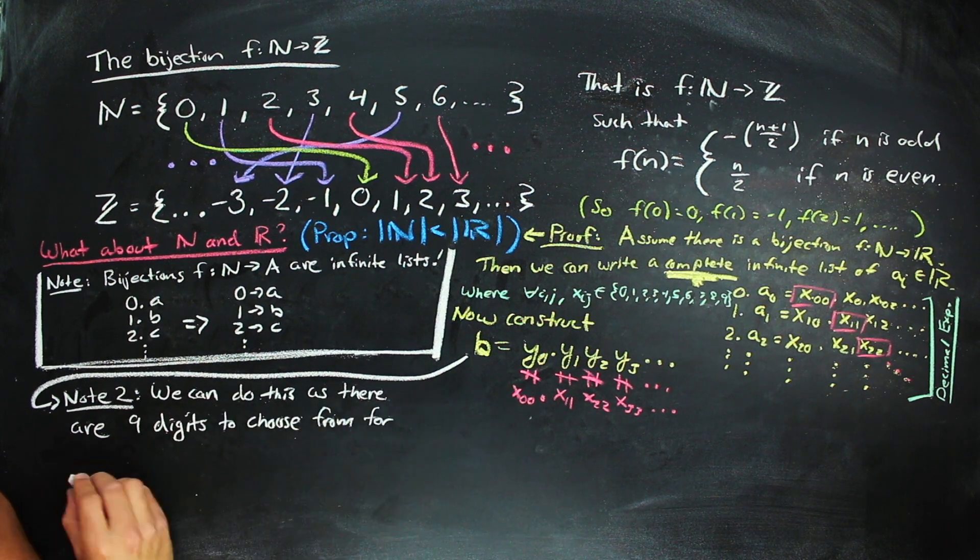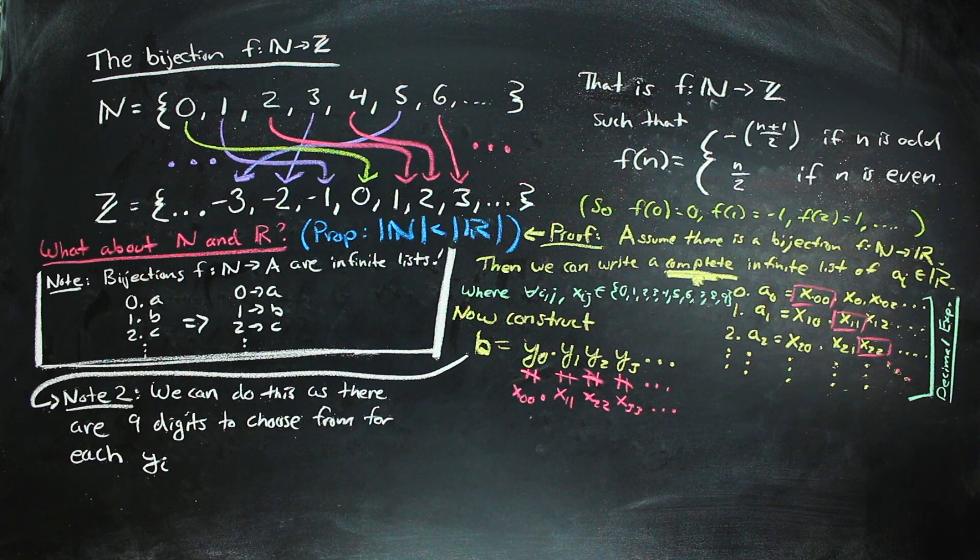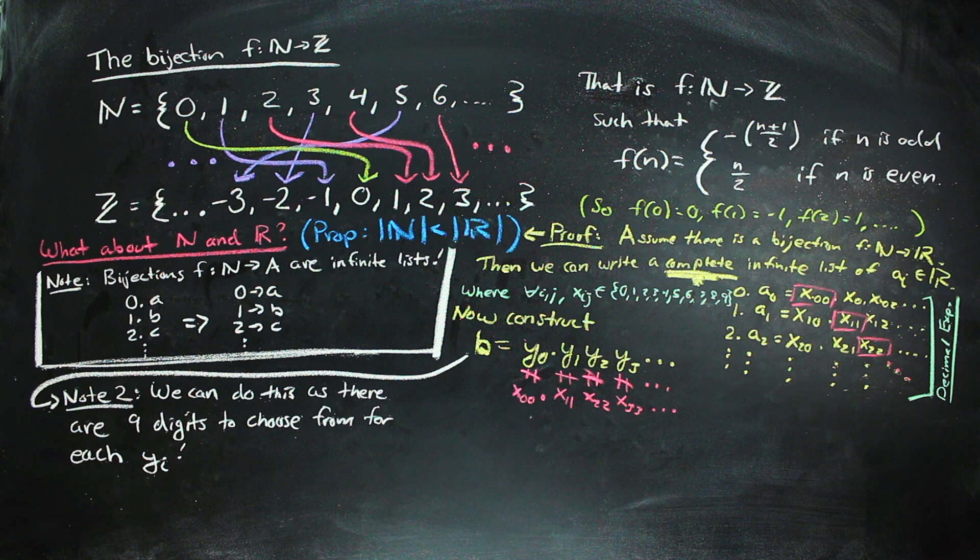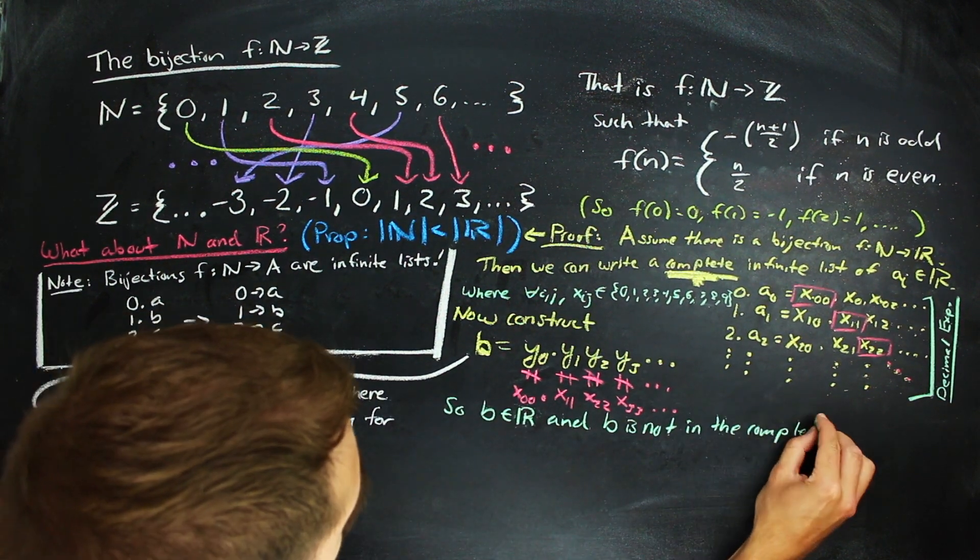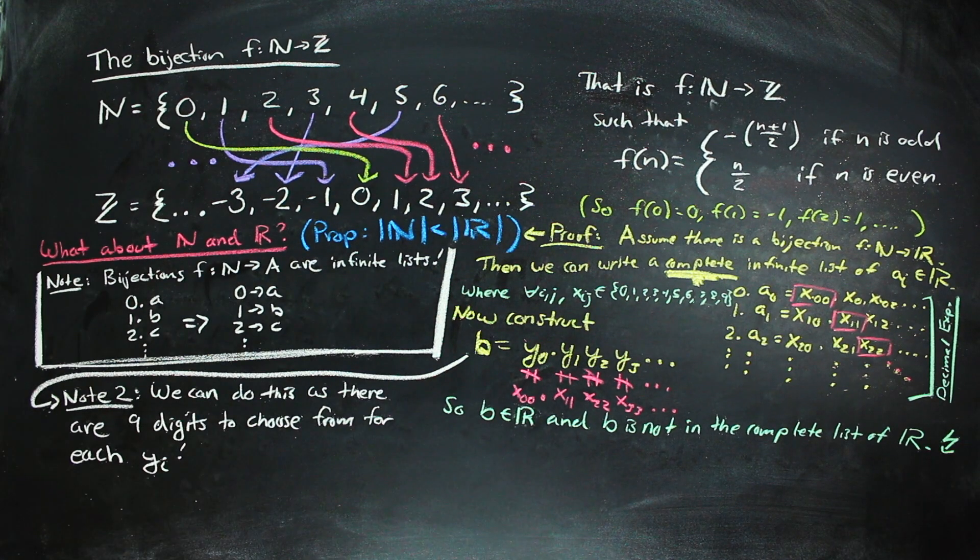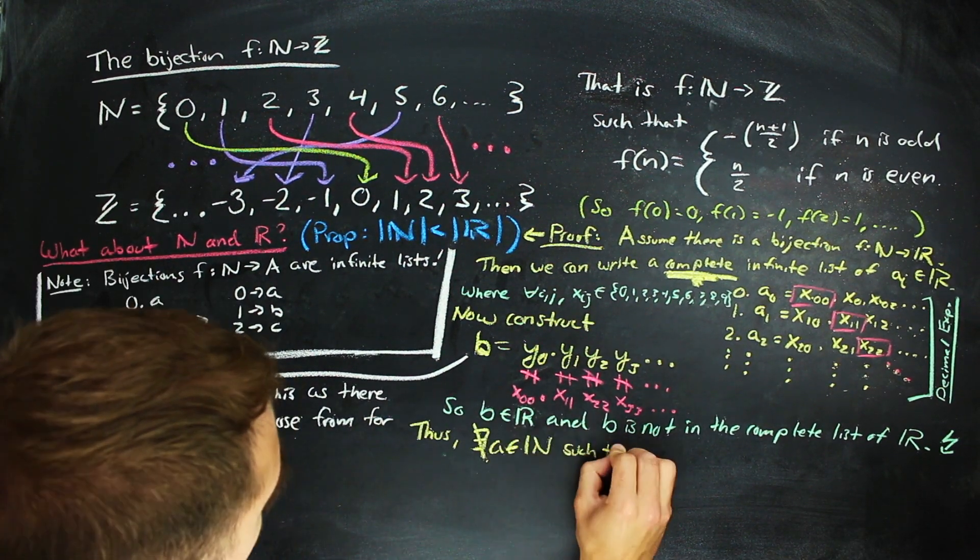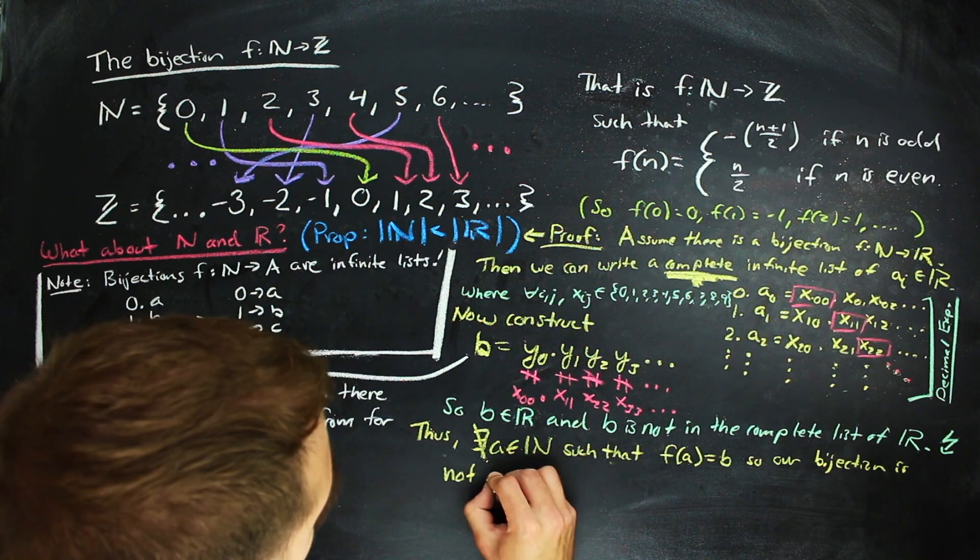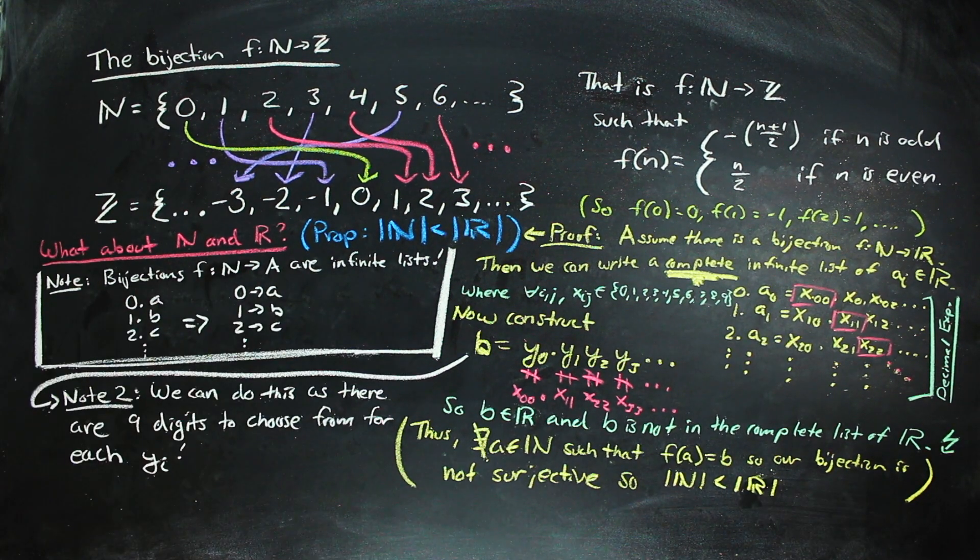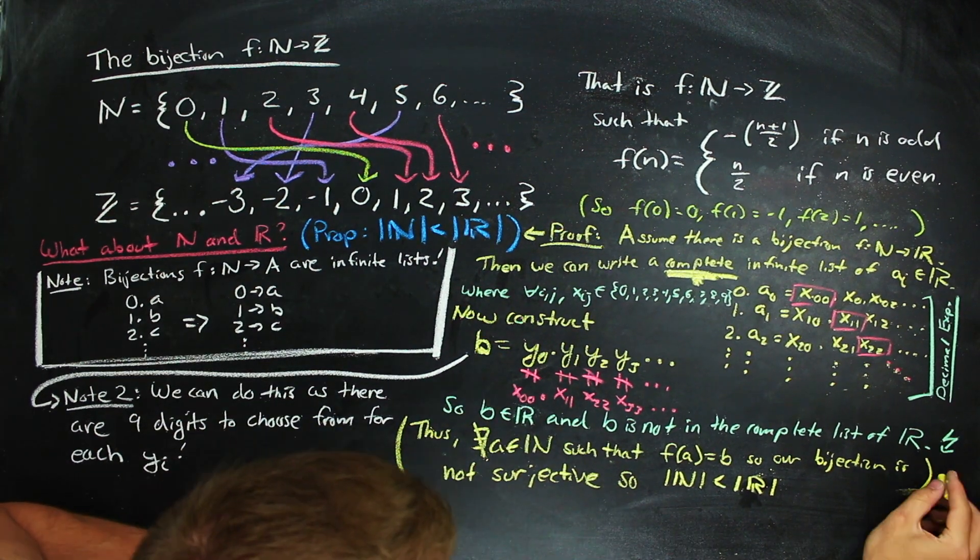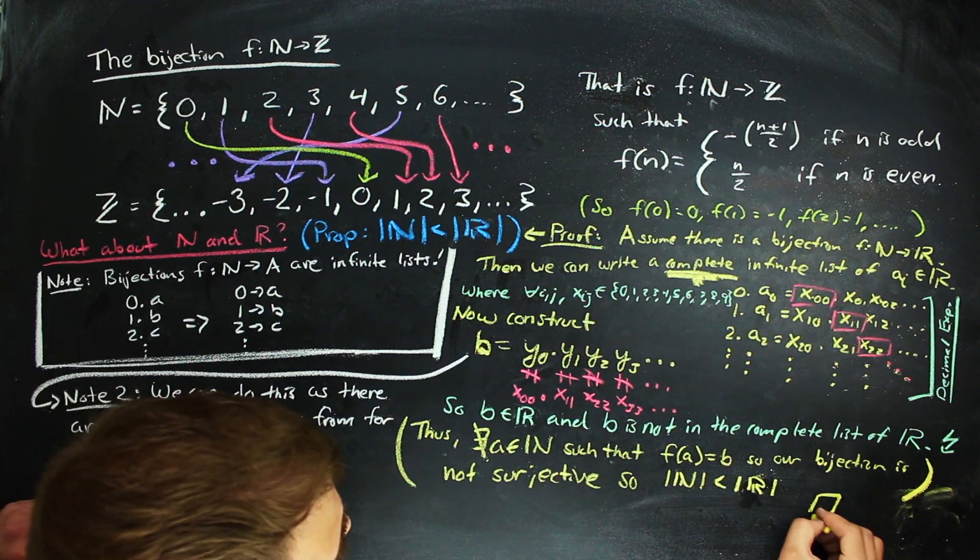Because for each digit in b, we actually have nine different digits to choose from. b, by construction, is not in the list because it doesn't equal any of the other things in the list. And thus, there is no bijection, and in particular, we can fit the naturals inside of the reals, but we can't hit all of the reals with the naturals. And so we have an infinite set that is larger in cardinality than the natural numbers.